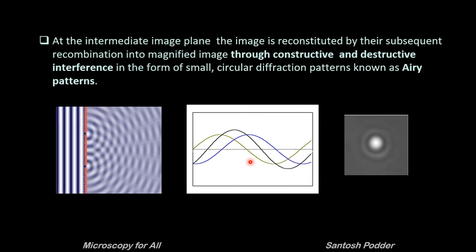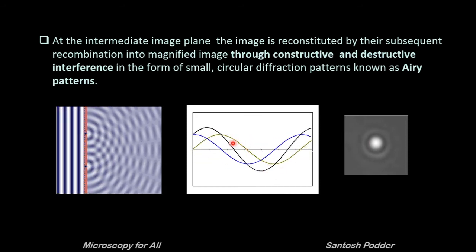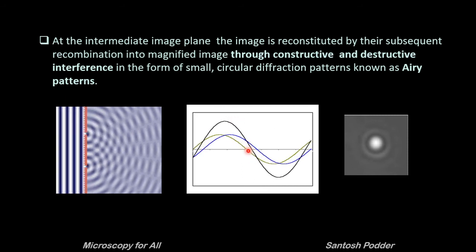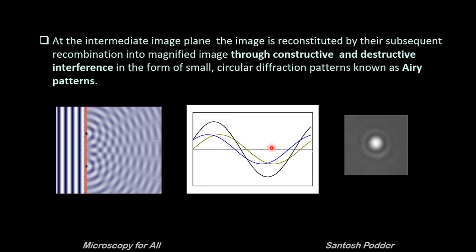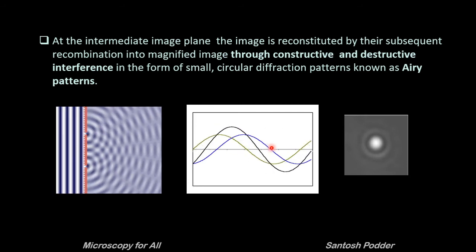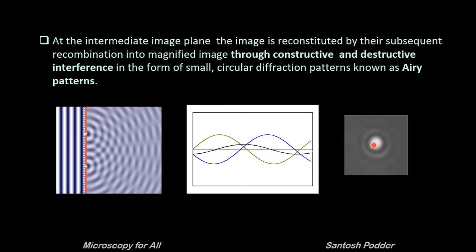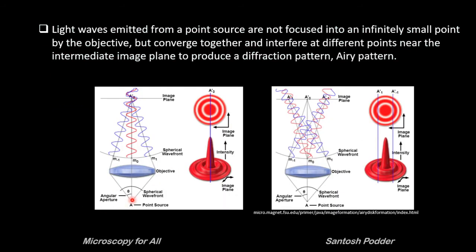Constructive interference happens when the phase of the waves matches and their amplitude increases. Whereas in destructive interference both waves are 180 degrees out of phase, as a result their resultant amplitude nullifies or cancels each other. However, most interference occurs somewhere in between. These Airy patterns occur because light waves emitted from a single point source are not focused into an infinitely small point by the objective. Rather, spherical waves coming from different points converge together and interfere at different points.